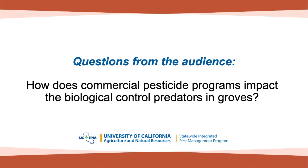How do commercial pesticide programs impact the biological control predators in groves? If you're into a hardcore, hot treatment program, then you're probably wiping out a lot of your natural enemies. Growers on a low-intensity IPM program are probably doing a better job at conserving their natural enemies. It basically boils down to what you think is more important: preserving natural enemy activity in your orchards and allowing them to do a lot of the work, or going in and trying to kill as much stuff as you can with insecticides. A lot of the growers we talk to have divergent philosophies on that — some are okay with a scorched-earth approach and others are trying to take a more balanced approach.